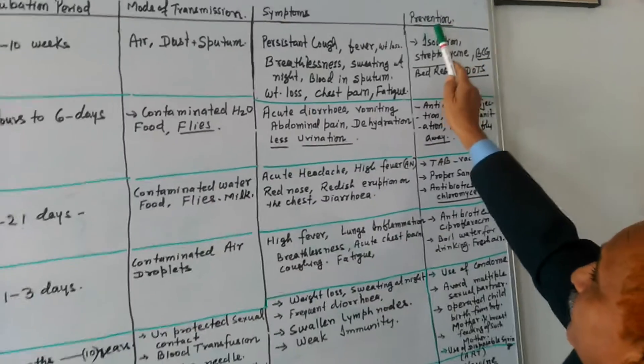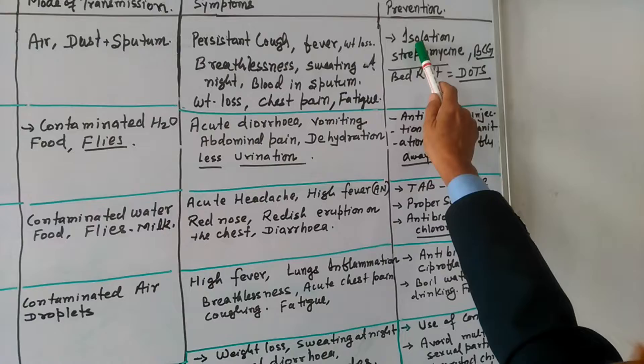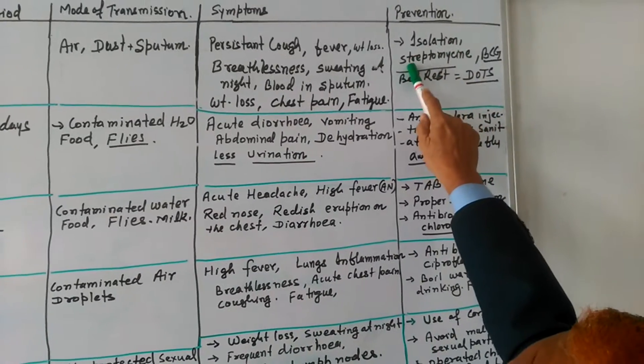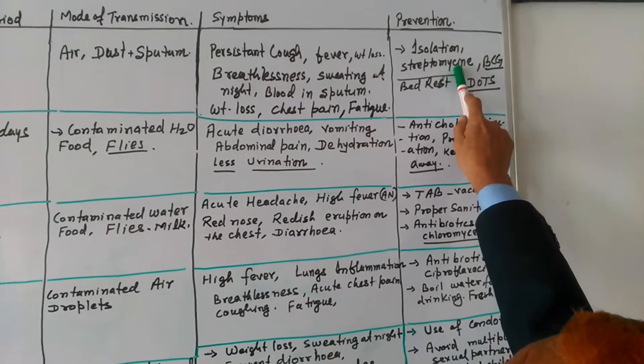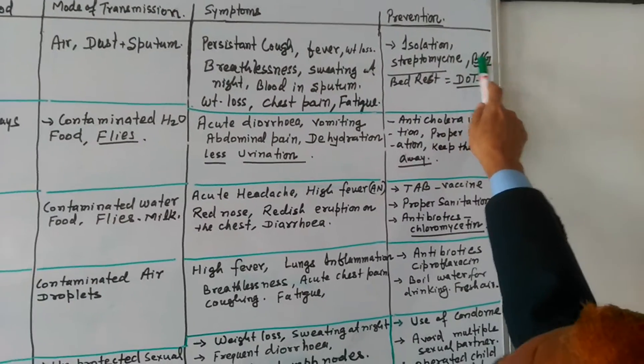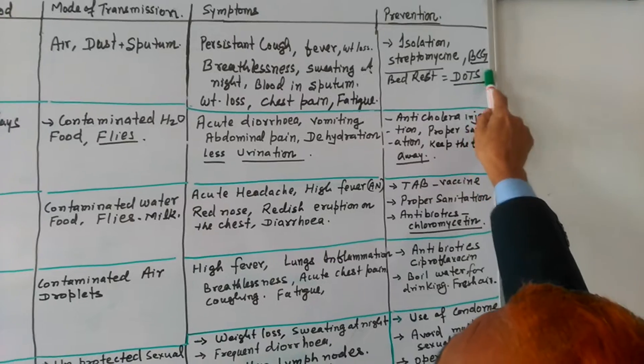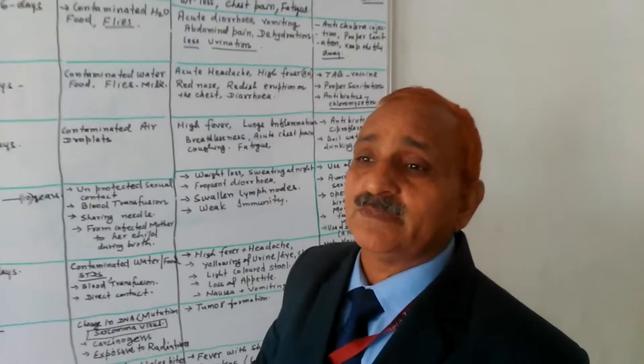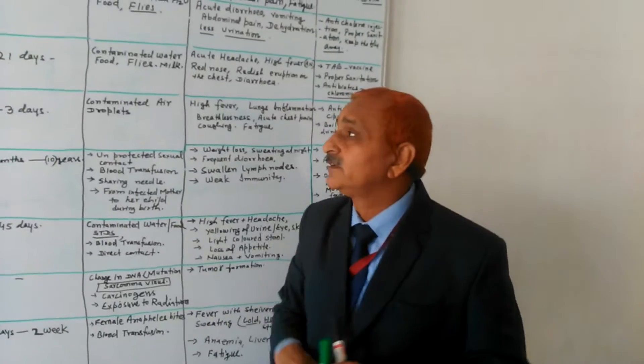We have a prevention from isolation that keeps the patient isolated. Streptomycin medicine antibiotic is given. BCG vaccine is available and bed rest. And this is a DOTS, direct observation treatment. The patient should remain in the direct treatment with the doctor.